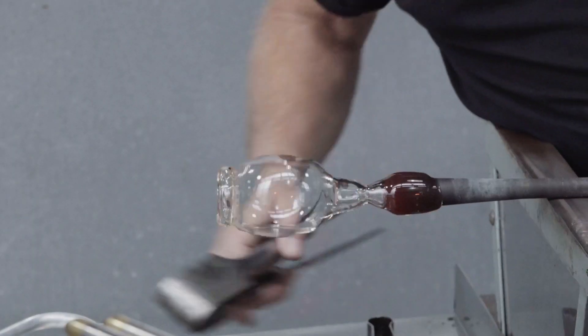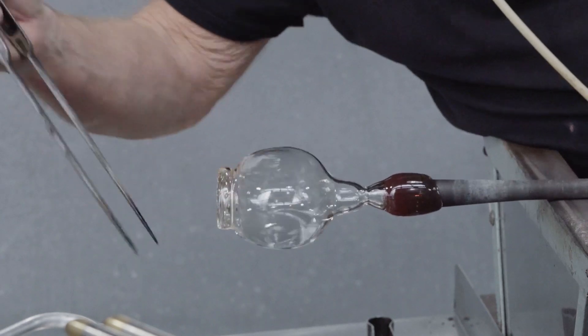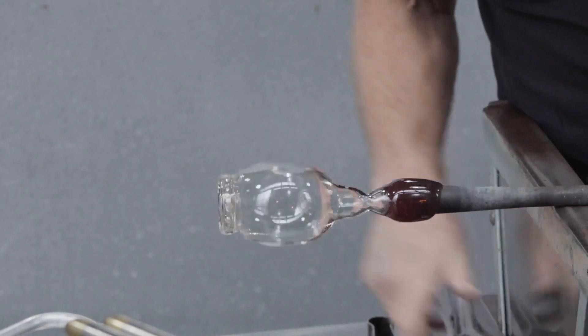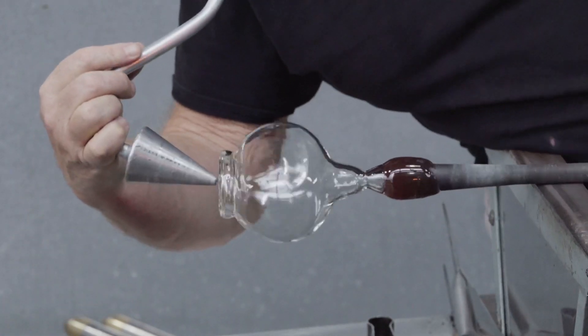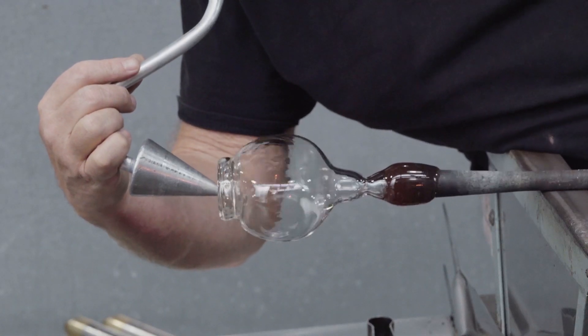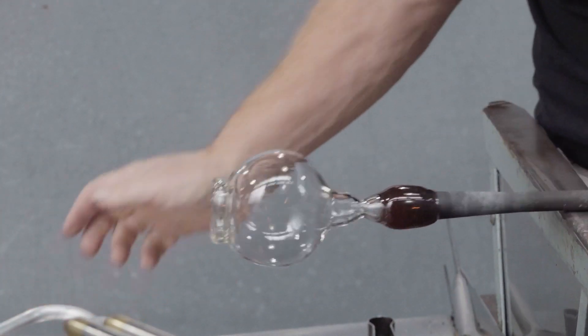Before transferring to the punty, it's essential to flatten the bottom. During the process of making the bubble and the foot oval, the foot ceases to be flat.